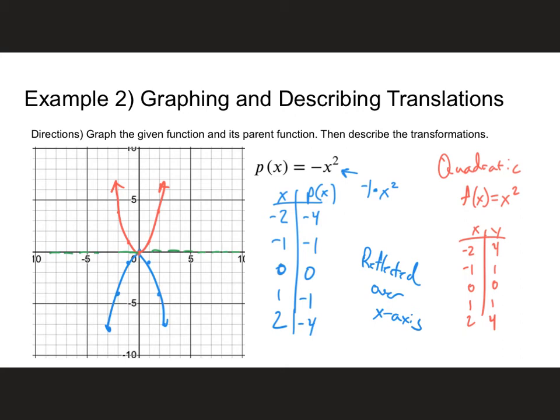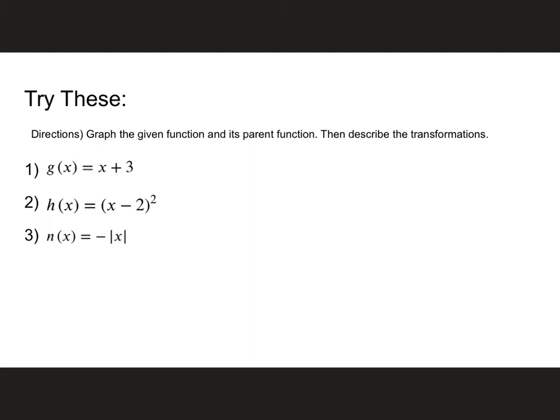So here's where I want you to pause the video. Get a piece of graph paper, graph the given function and its parent function, and tell me what the transformations were — just like we did in the previous two examples. Create a table of values, sketch the graph, graph the parent function, and describe the transformations. Pause the video right now — I'll be here when you get back.